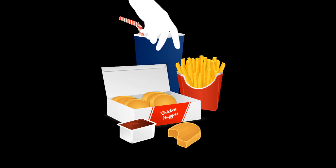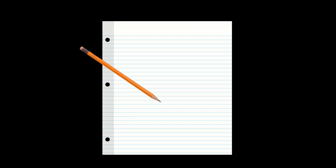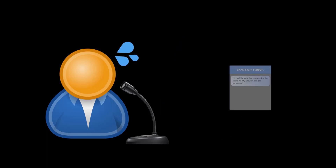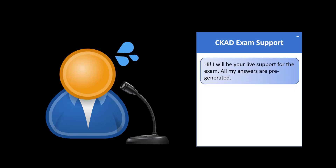You can't eat during the exam, and you can only drink clear liquids from clear bottles or from a clear glass. You're not allowed to have a scratch sheet, so don't bother with pen and paper. You have to have an active mic, but for the socially anxious, all of your communication with your proctor will be through a chat bar.